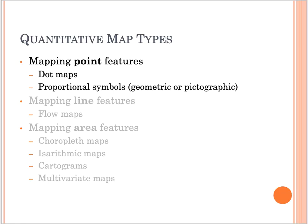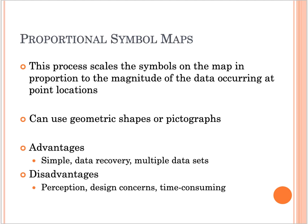Next, I want to talk about proportional symbols — geometric or pictograph. For proportional symbol maps, this process scales the symbols on the map in proportion to the magnitude of the data occurring at point locations. You can use geometric shapes or pictographs. The advantages are simple, easy data recovery, and the ability to use multiple datasets. The disadvantages are perception and design concerns, and it is time consuming.